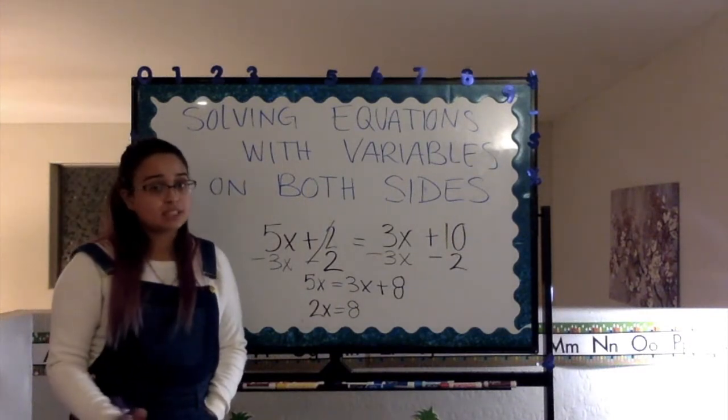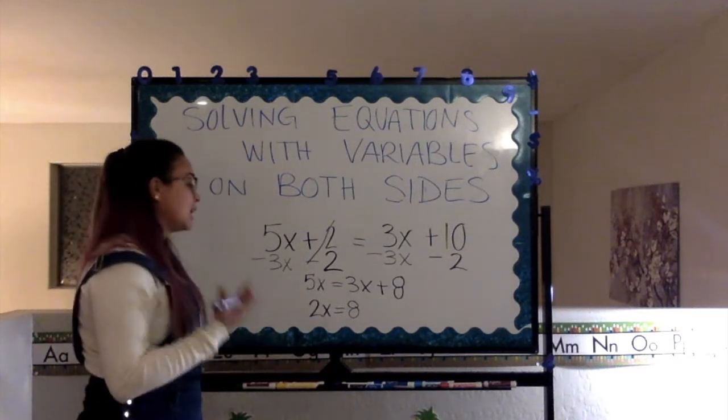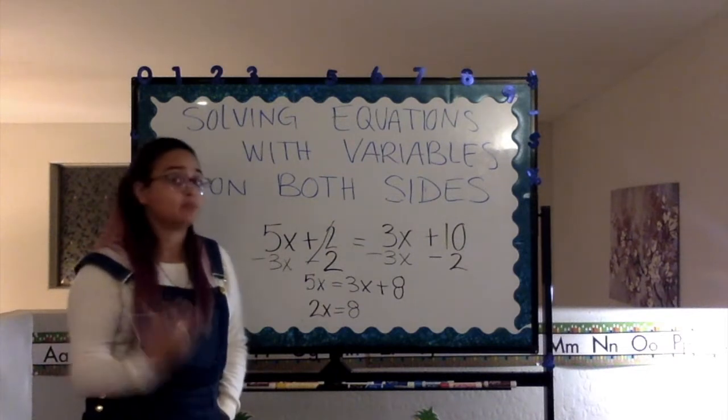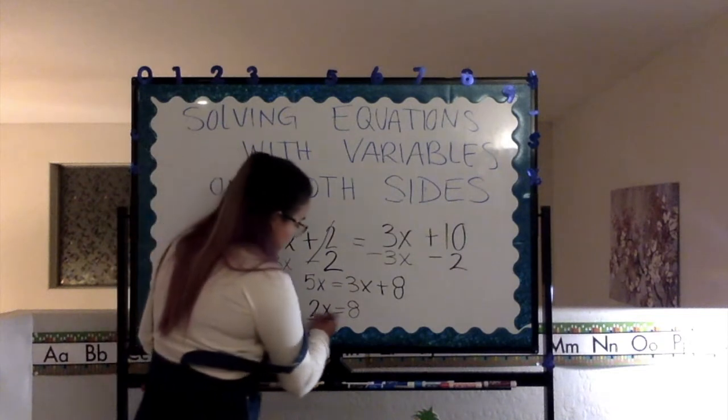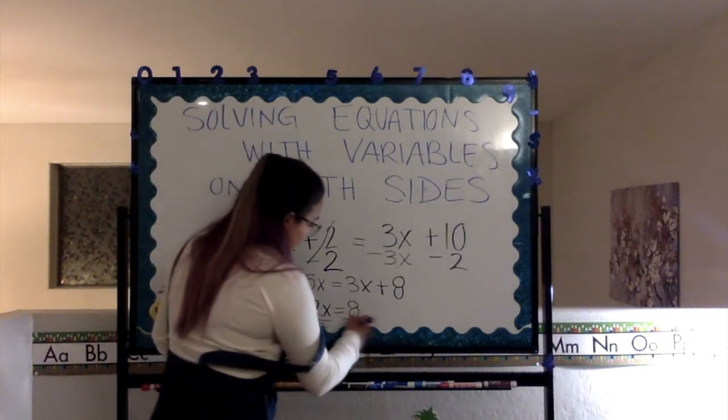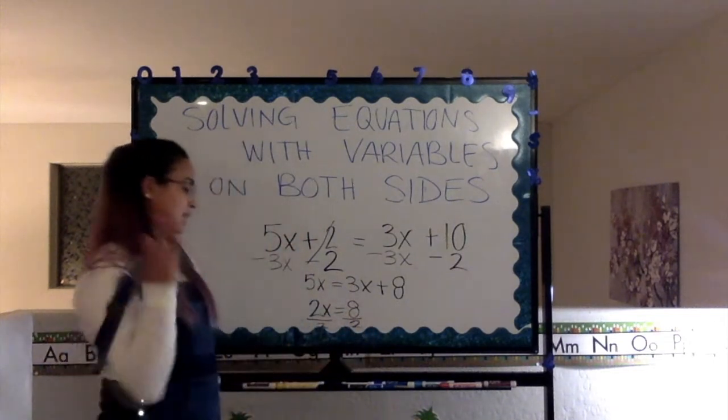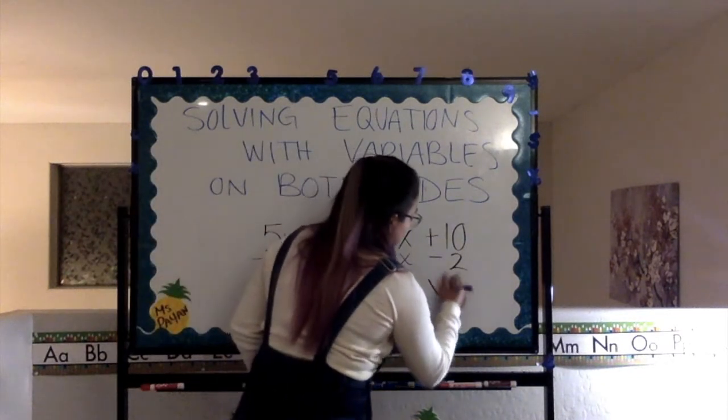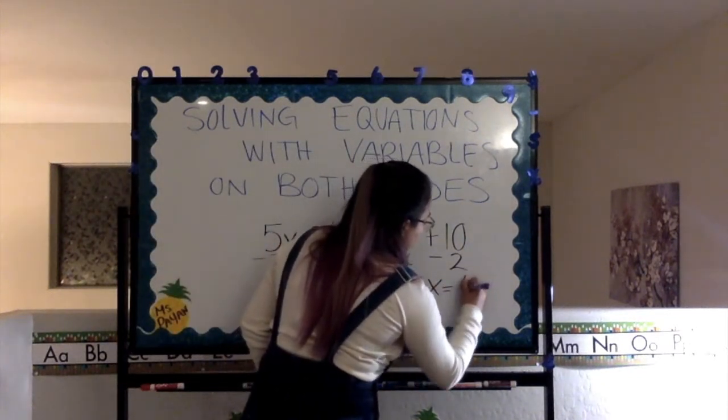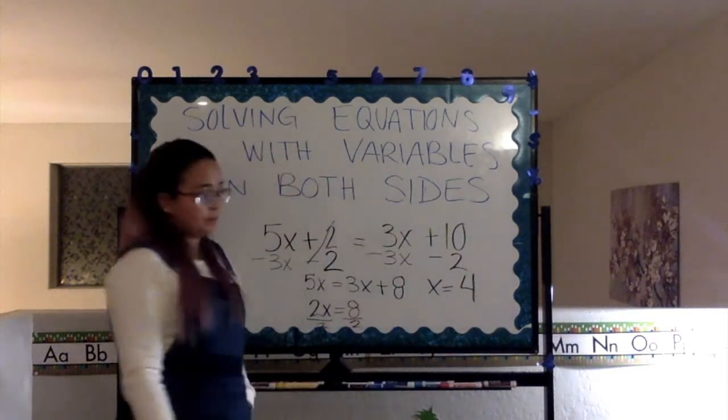2x equals 8. This looks like a one step equation now. Very simple. We're going to divide 2 to both sides. And, after dividing 2 to both sides, we are left with x equals 4.